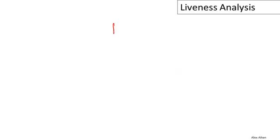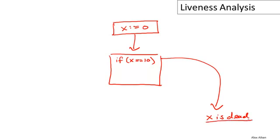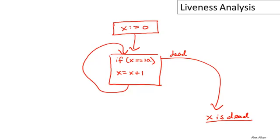Let's do a simple example with a loop. We begin by initializing X to zero, then the loop body checks whether X equals ten — if it is, we exit the loop; otherwise, we increment X and branch back to the top. We assume X is dead on exit, so X is not referred to outside the loop. Since X is dead on exit, it's clearly dead on the out-branch of the conditional. So X's liveness is false there, and we assume X is also not live everywhere else initially.